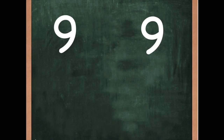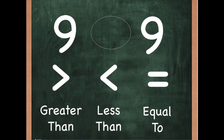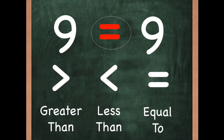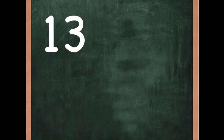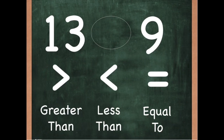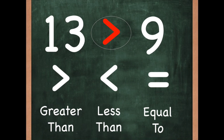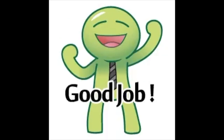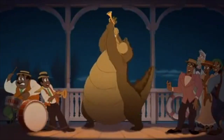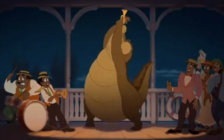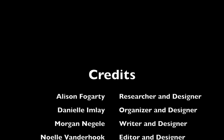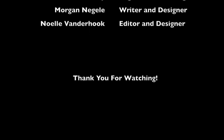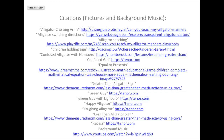If you have a nine and a nine, which symbol will you use? That's right — an equal sign! Last one: if you have a thirteen and a nine, which symbol will we use? That's right — greater than! Let's give ourselves a round of applause!